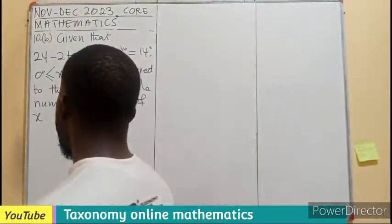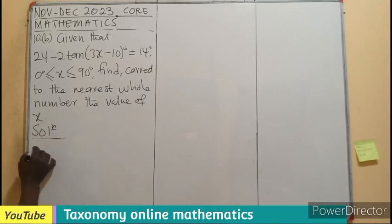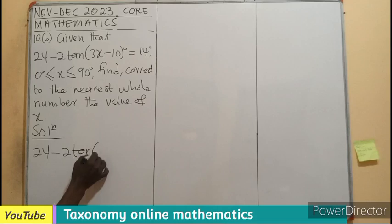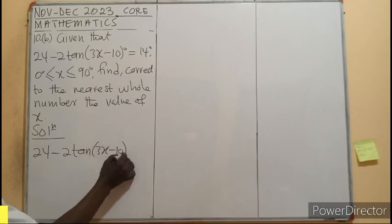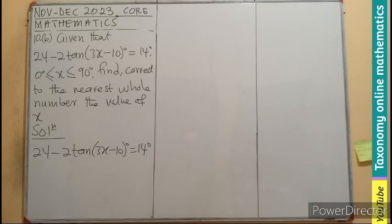So let's just take this as an equation. We have 24 minus 2 tan(3x minus 10) equals 14. So we are taking it as an equation.